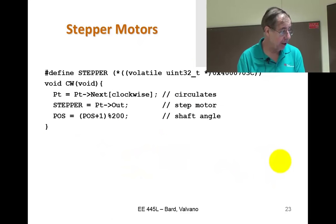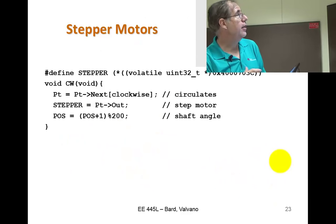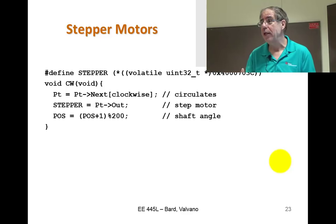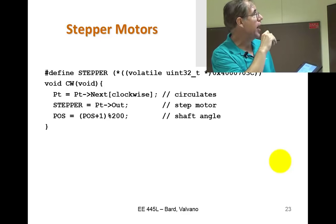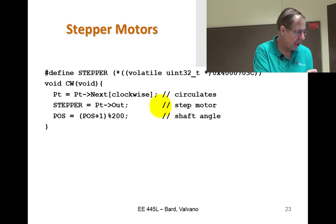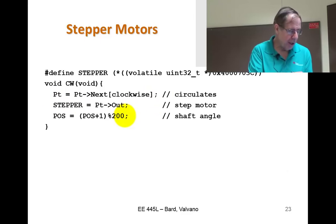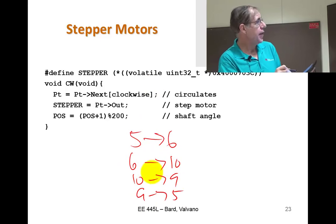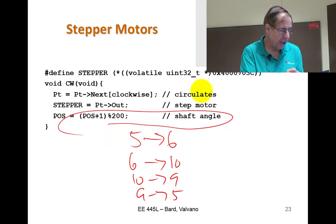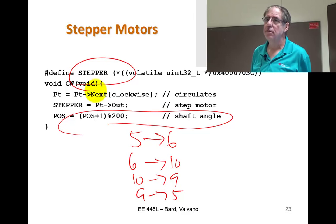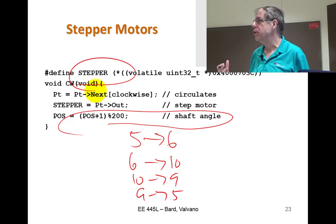There's a function that implements the state machine — it does output, weight, input, next. This version doesn't have a wait built in; the rate at which you call clockwise determines the speed. Using the state graph: if it's 5 it goes to 6, if it's 6 it goes to 10, if it's 10 it goes to 9, if it's 9 it goes to 5. This tracks the shaft angle.